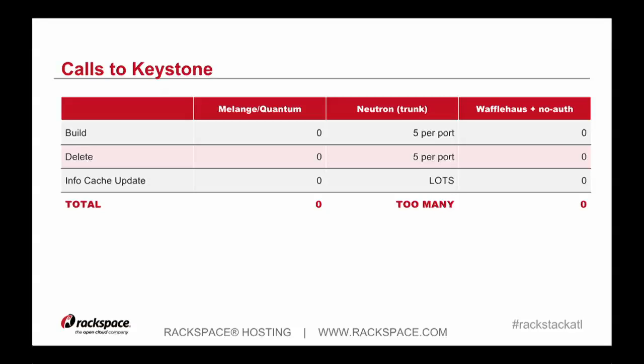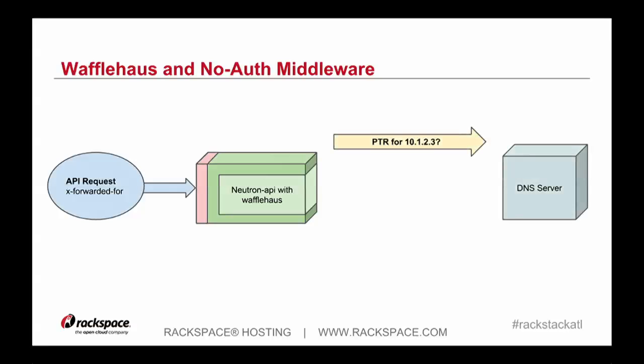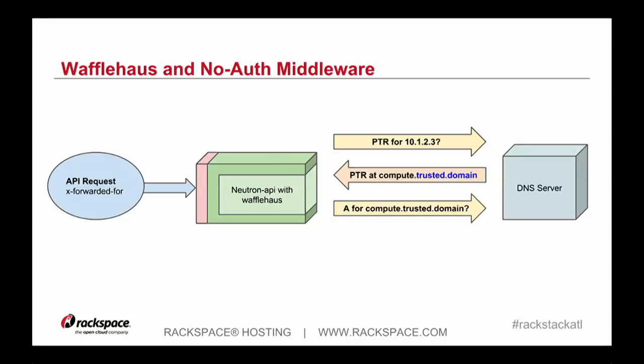Our Nova is working with normal Keystone authentication and Neutron on the other side has no-auth. So every single request is just not authed. The API request will come in with the X-Forwarded-For header, it will hit the Neutron API with Waffle House, and it will do a pointer query on the original requester to the DNS server. If that particular hostname is part of our configured trusted domains, we do an additional step to make sure that the address record matches the original requester — mail servers have done this for a long time. So by doing this, we know the request going through no-auth is coming from a trusted source.